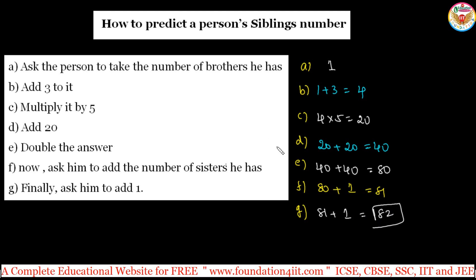According to the steps, they will tell you the number 82. To recap: ask them to take the number of brothers, then add 3, multiply by 5, add 20, double the answer, add the number of sisters, and finally add 1. They can do this calculation in mind or on paper, and then tell you the final answer.